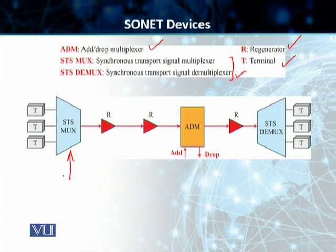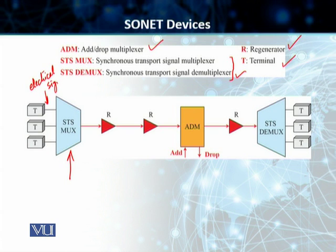The electrical signals are multiplexed by the STS multiplexer, and they create the corresponding OC signal. The input signal is electrical. Multiple electrical signals are multiplexed using this MUX into our OC, or optical signal, which then travels on our SONET line.